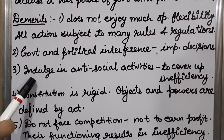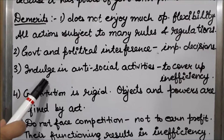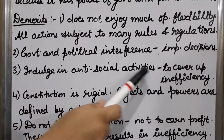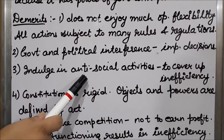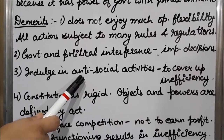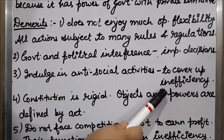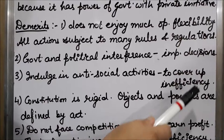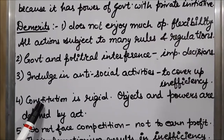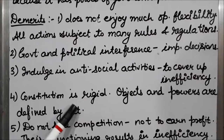Next, sometimes statutory corporations indulge in anti-social activities like charging high prices from customers — to cover up their inefficiencies. Next, the constitution of a statutory corporation is rigid and fixed, and its objects and powers are defined by the act.